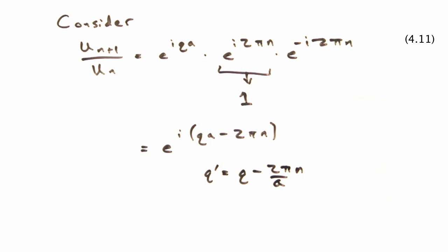Right, but now let's define a new wave vector q prime that equals q minus 2 pi n over a. Hmm, 2 pi over a is the magnitude of our g vector in 1D. So this q prime is just our original q minus an integer value of our reciprocal lattice.